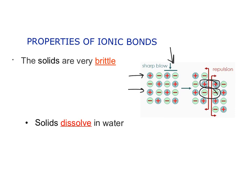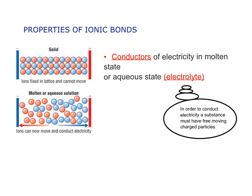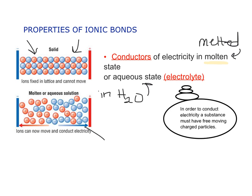Ionic compounds typically dissolve in water. Since the attraction is really strong, they have high melting points — it takes a lot of heat to turn them into a liquid. They also have low volatility, meaning they're not easily vaporized and are hard to turn into a gas. They do conduct electricity, but only in molten or aqueous states — molten meaning melted, aqueous meaning in water — because in order to conduct electricity a substance needs free-moving charged particles.